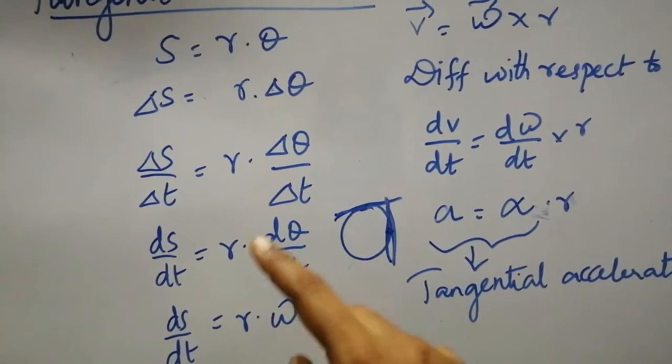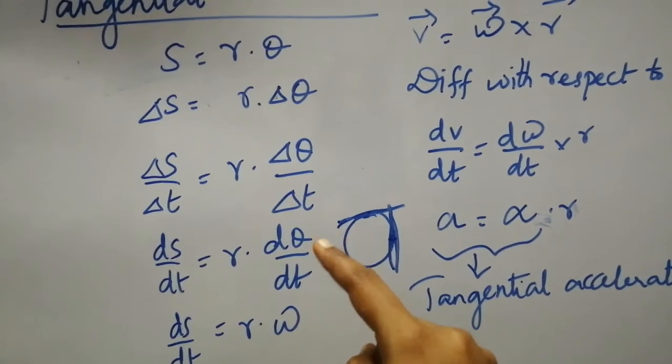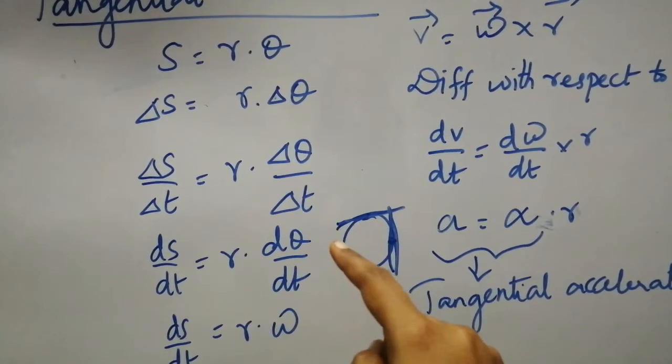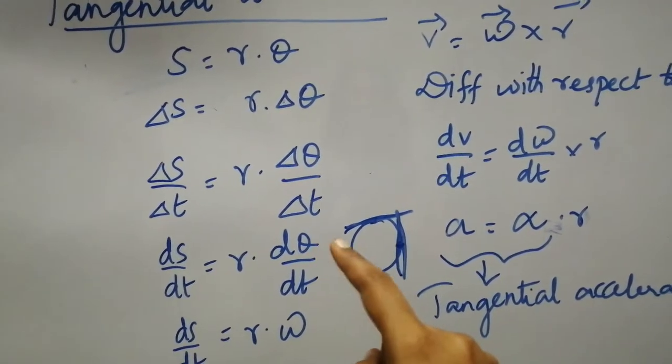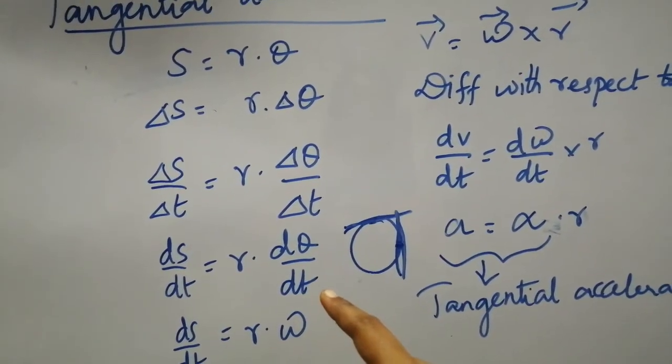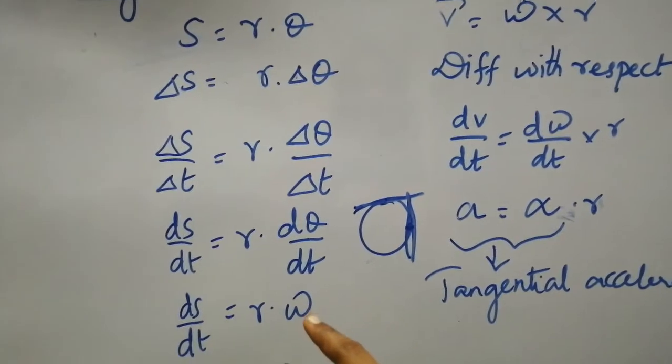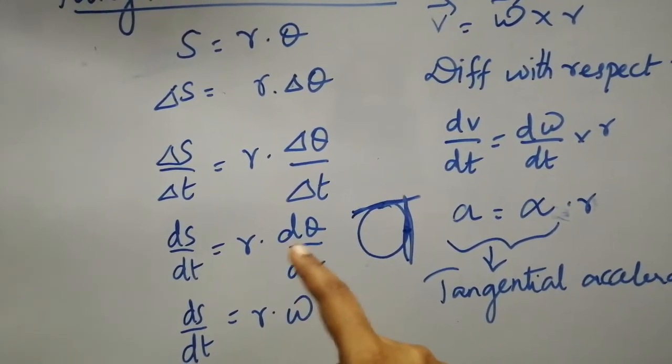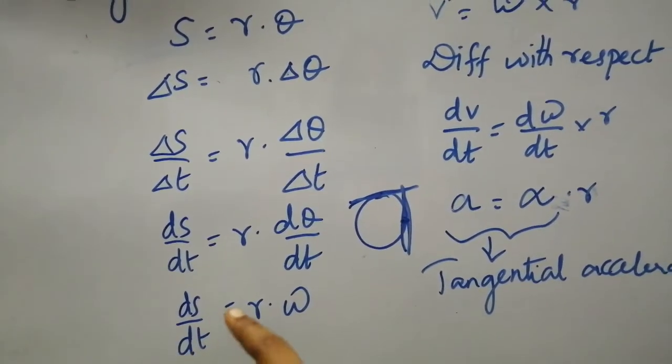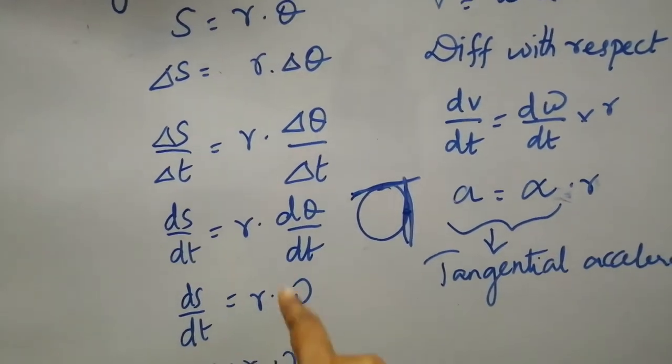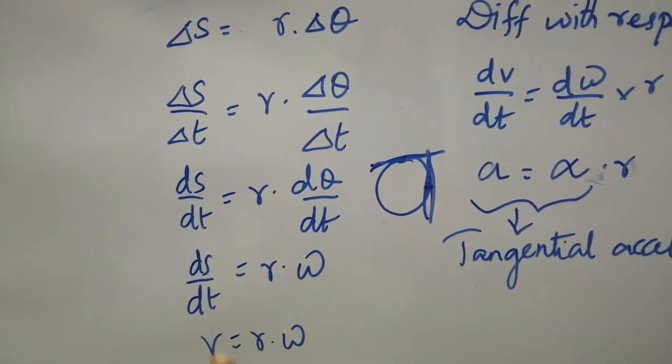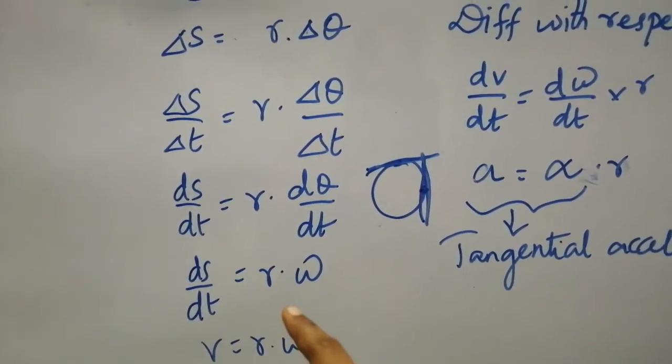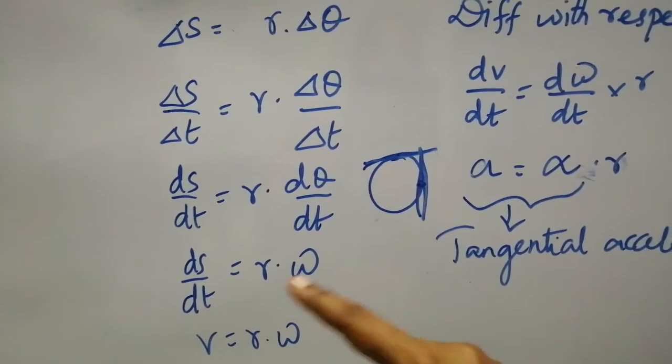So what is this D theta by DT? That is rate of change of displacement, isn't it? Angular displacement is theta. Angular displacement by time is called angular velocity. So angular velocity is omega. This can be given as DS by DT equal to R into omega. This DS by DT is normal displacement by time which is velocity. So velocity is equal to R into angular velocity omega.